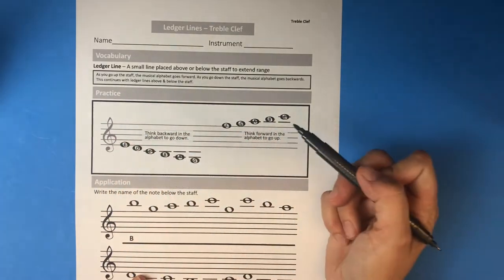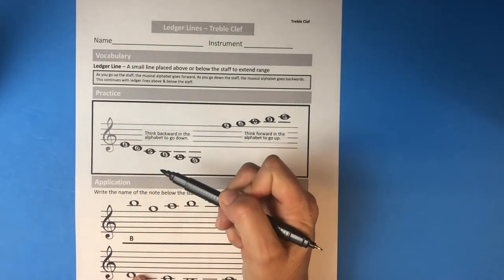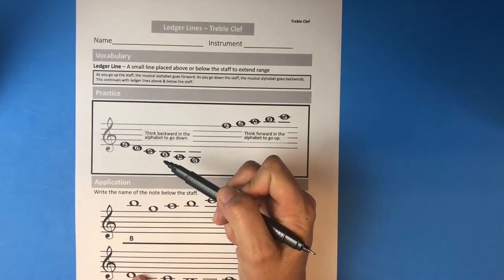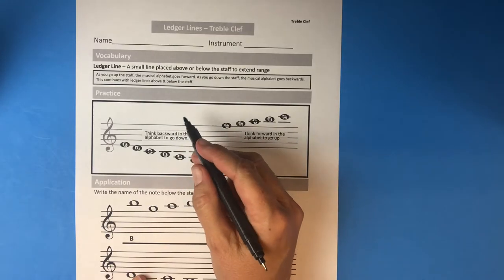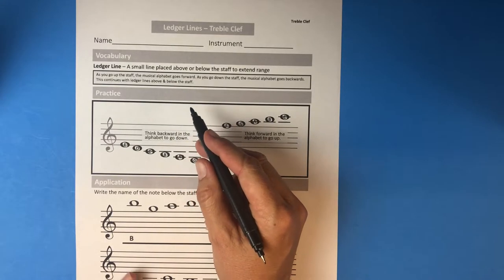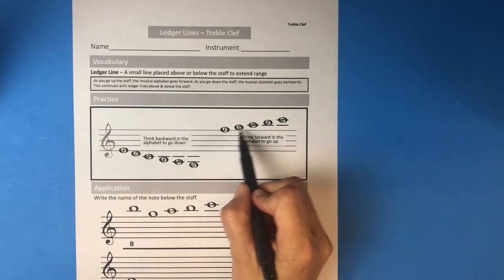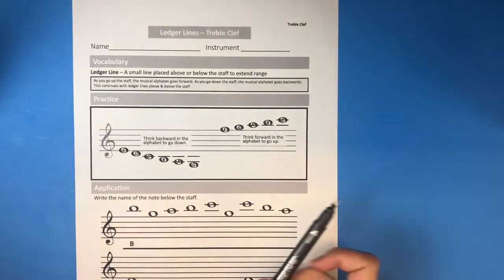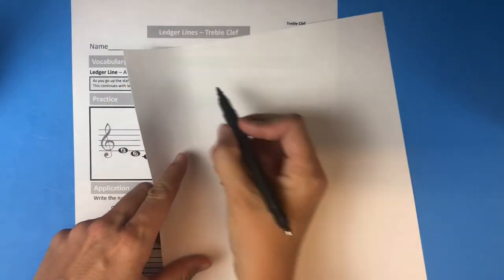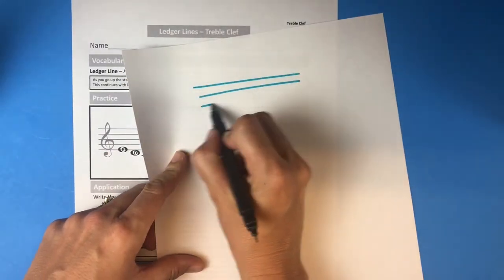Now remember, as you go up the staff, the musical alphabet goes forwards. As you go down the staff, the musical alphabet goes backwards. We talked about that last time. This continues with ledger lines above and below the staff. We're going to look at this part first because going up is just a little bit easier to talk about than going down.